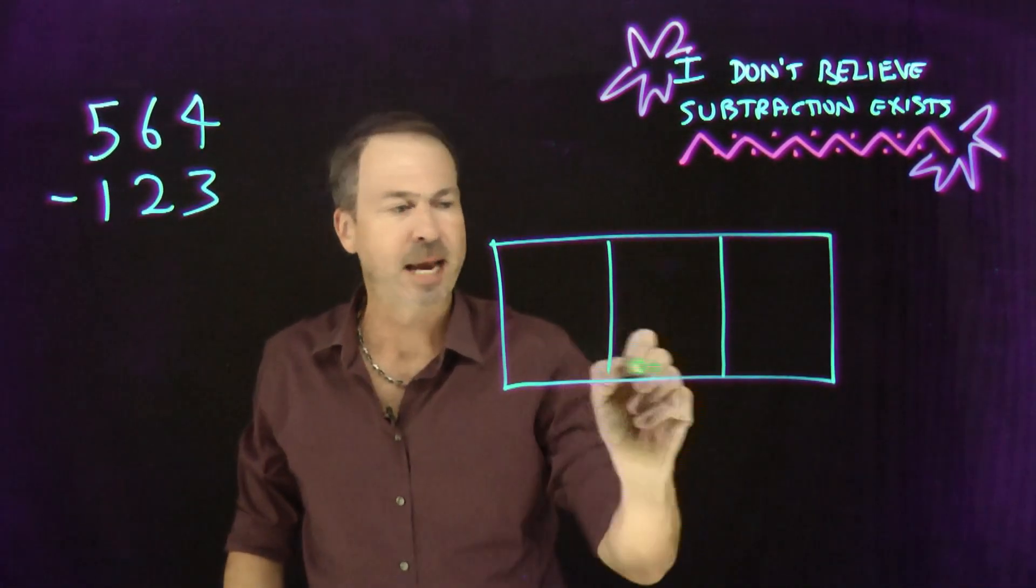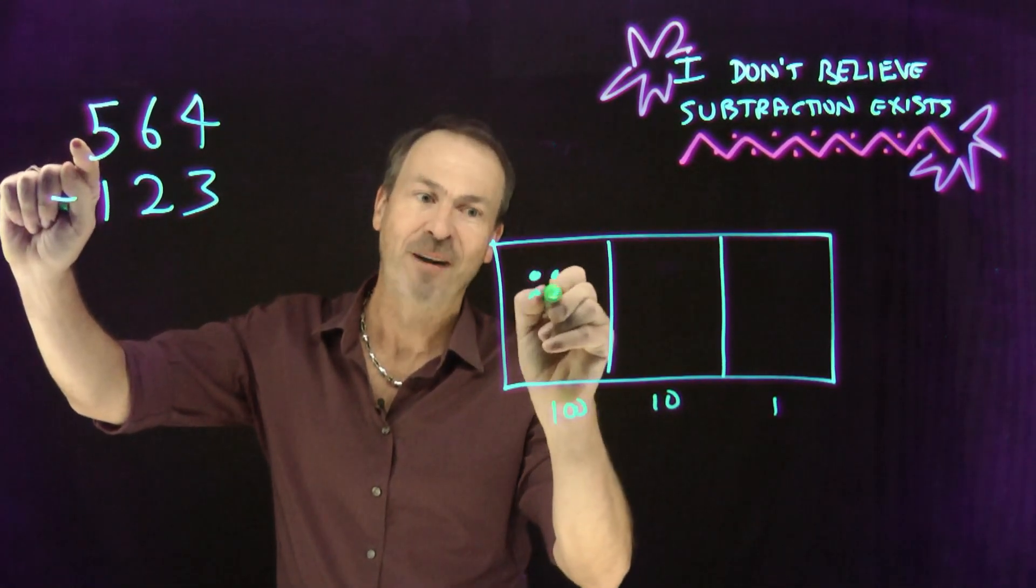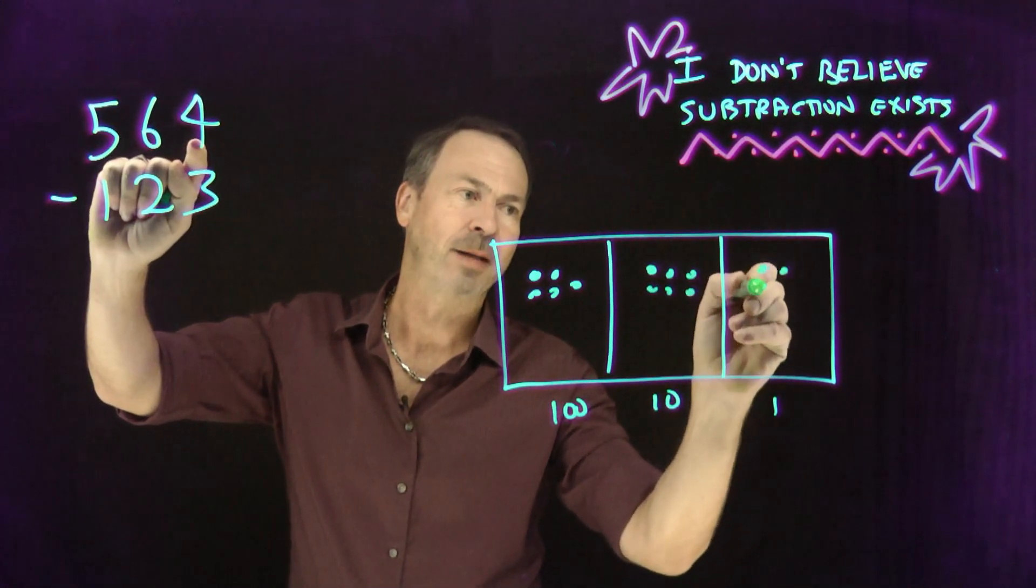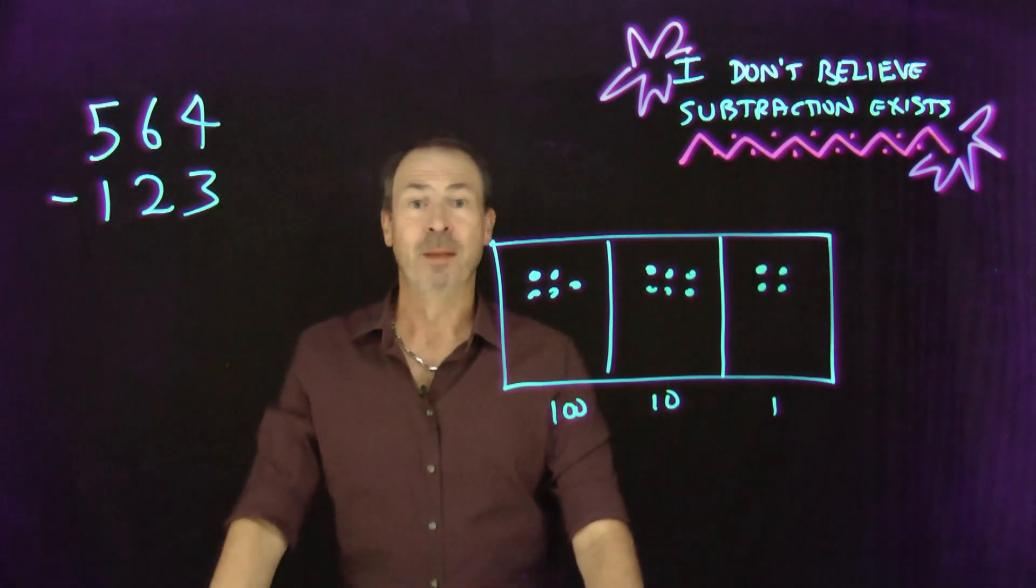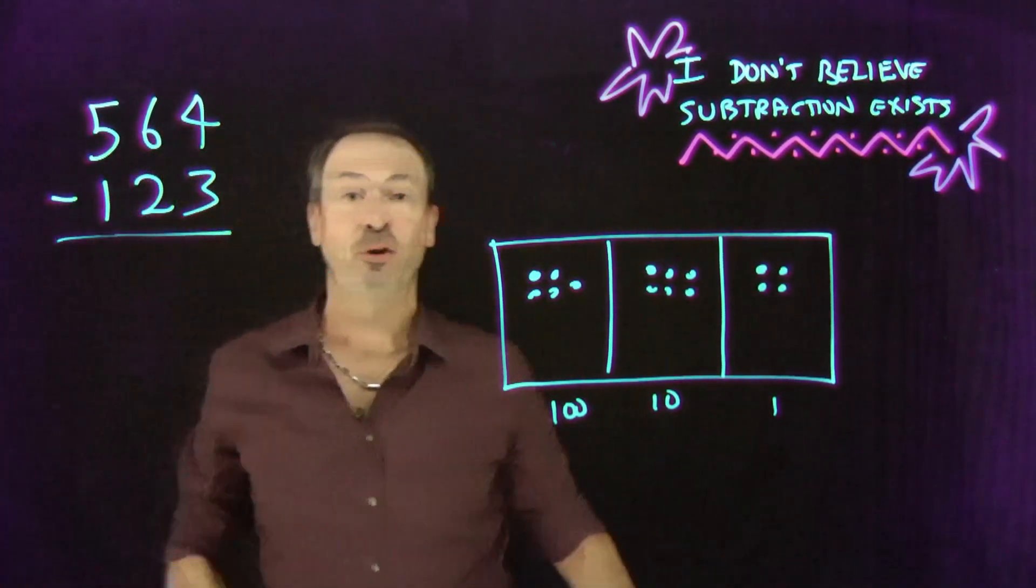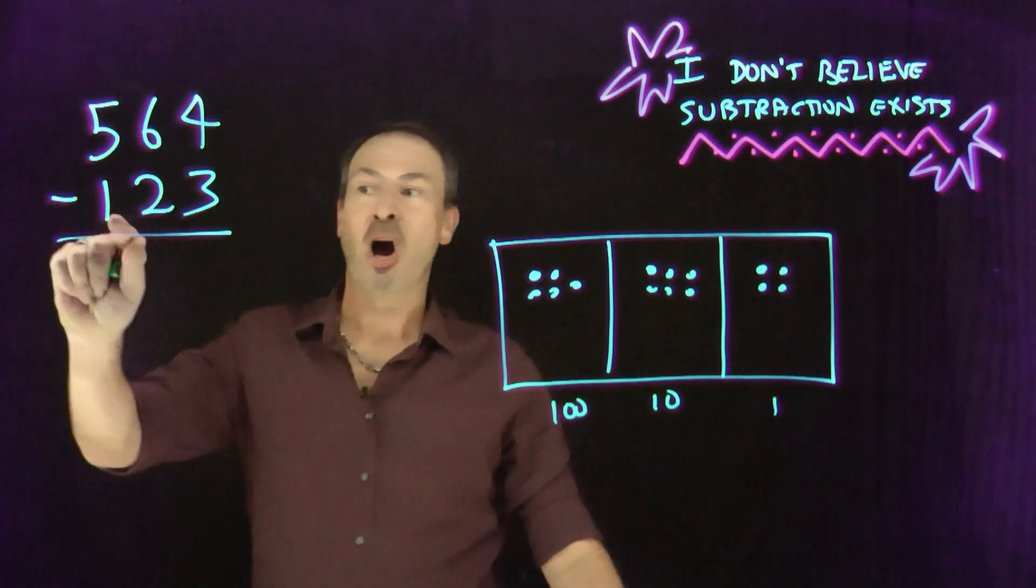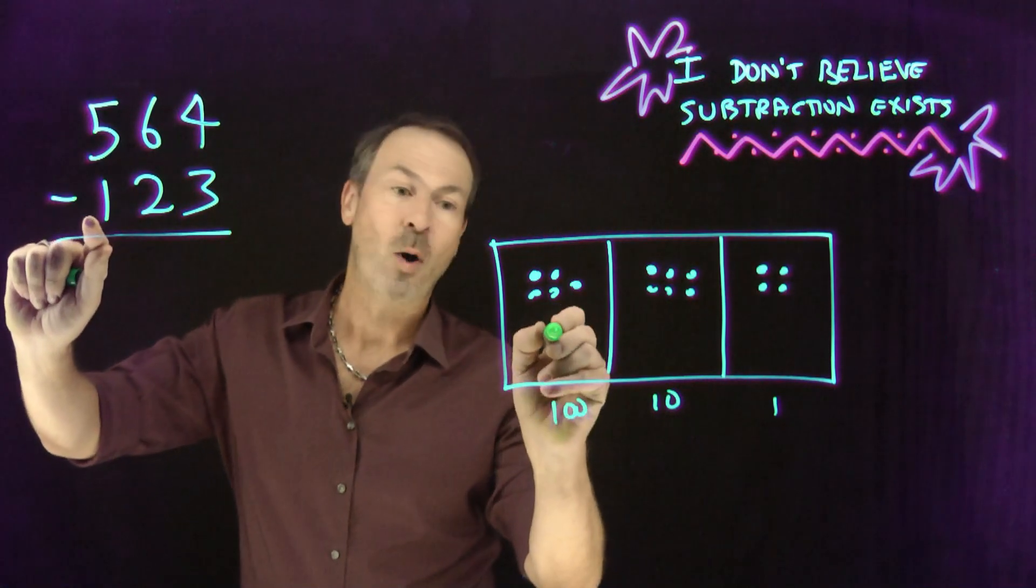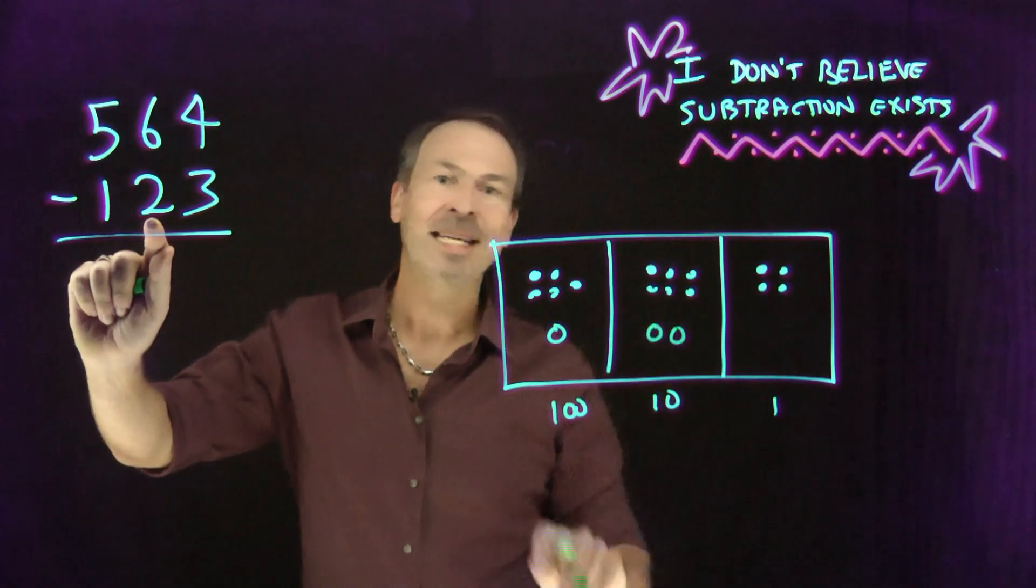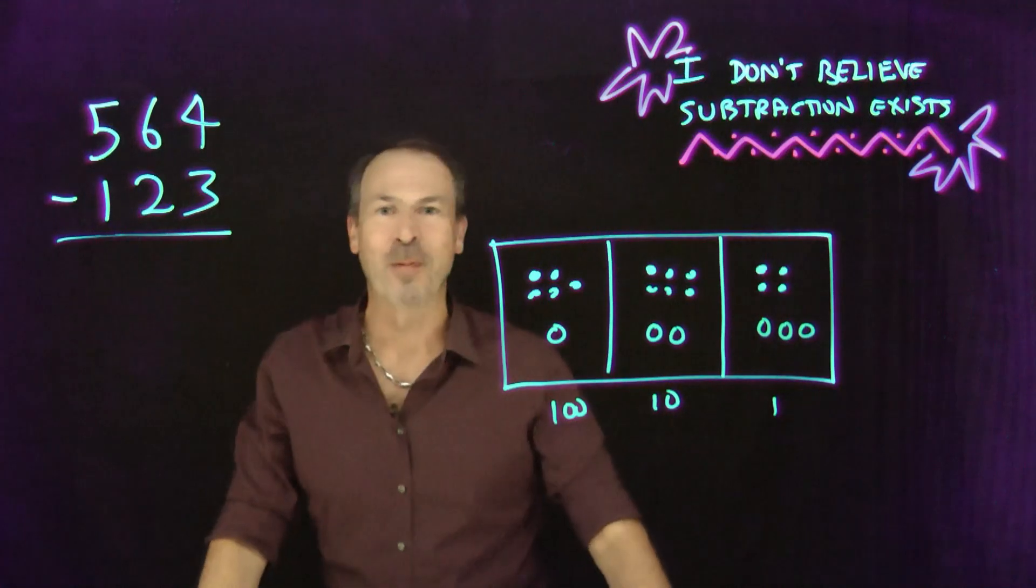I'm literally saying five hundred. Six tens and four. Four ones. There's five hundred and sixty-four. And I'm doing this long subtraction. I want to now take away one hundred and twenty-three. But I don't believe in take away. I don't believe in subtraction. To me this is the addition of the opposite of one hundred and twenty-three. The opposite of one hundred will be one opposite dot in the hundreds place. The opposite of two tens will be two anti-tens. Two anti-dots there. The opposite of three ones will be three anti-ones. Three opposite dots there.